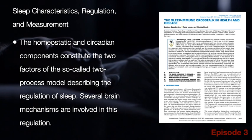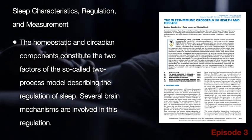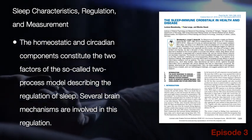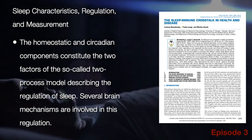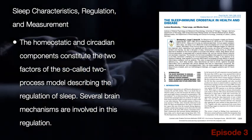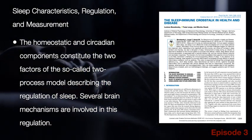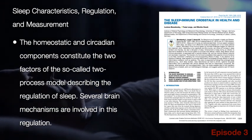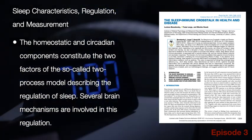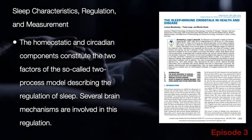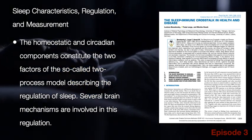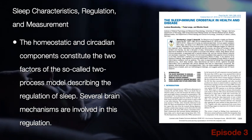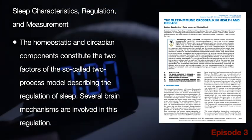A continuation of episode 2: Sleep Characteristics, Regulation and Measurement. The homeostatic and circadian components constitute the two factors of the so-called two-process model describing the regulation of sleep. Several brain mechanisms are involved in this regulation.